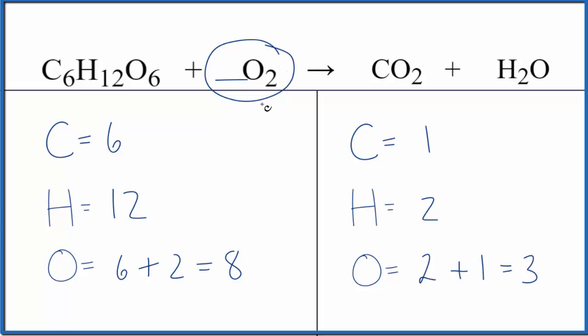So we'll leave oxygen until last. Let's start by putting a six in front of the CO2. One times six. That'll balance the carbon atoms. The six goes to everything here, though. So we need to update the oxygens. Six times two is 12. Plus we have the one here in water. So we have 13 oxygen atoms.